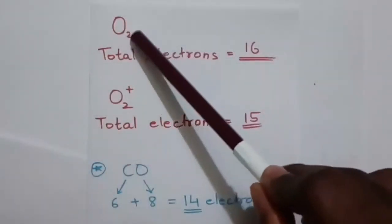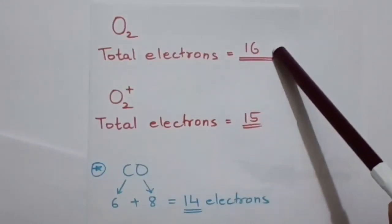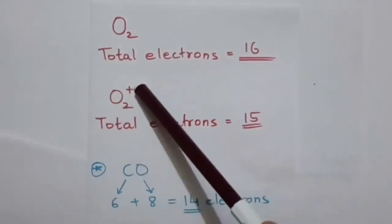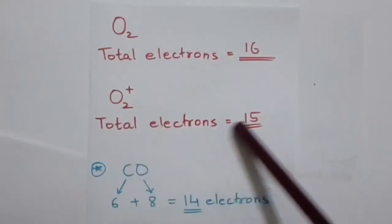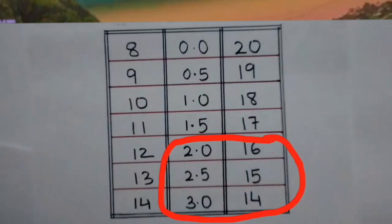Similarly, in O2, the total electron is 16. In O2 with a positive charge, the total electron is 15. In carbon monoxide, we have total electron as 14. Please check the table and accordingly, you will get the bond order.